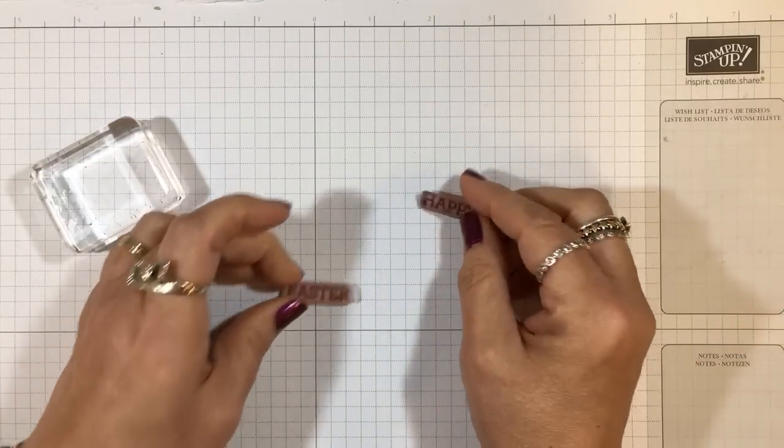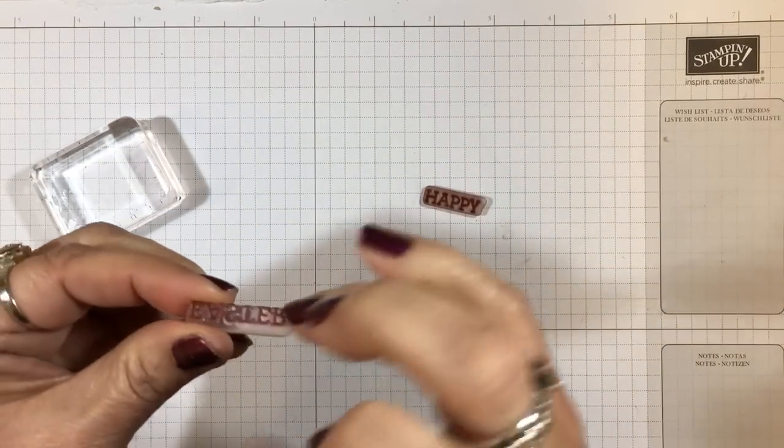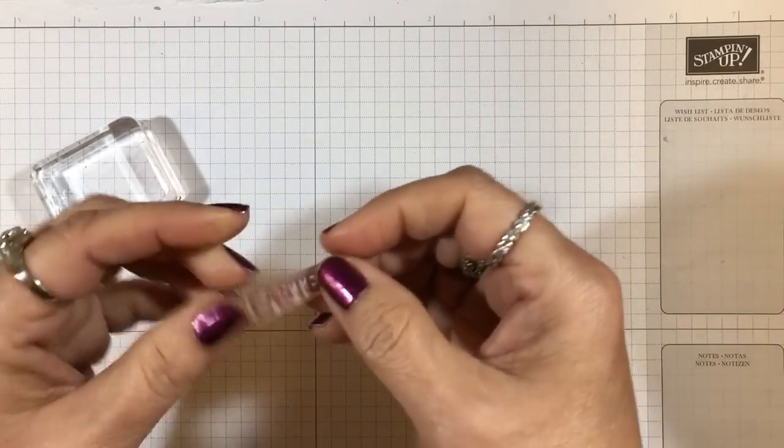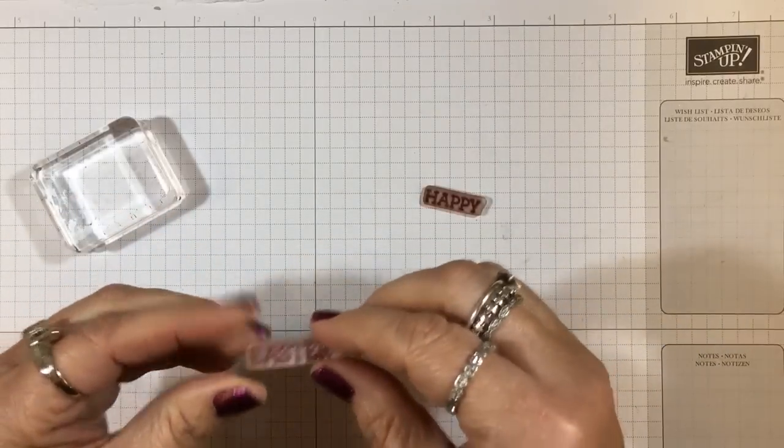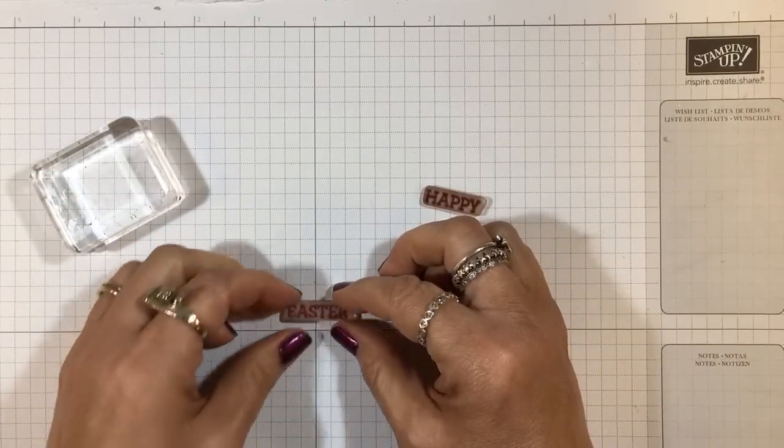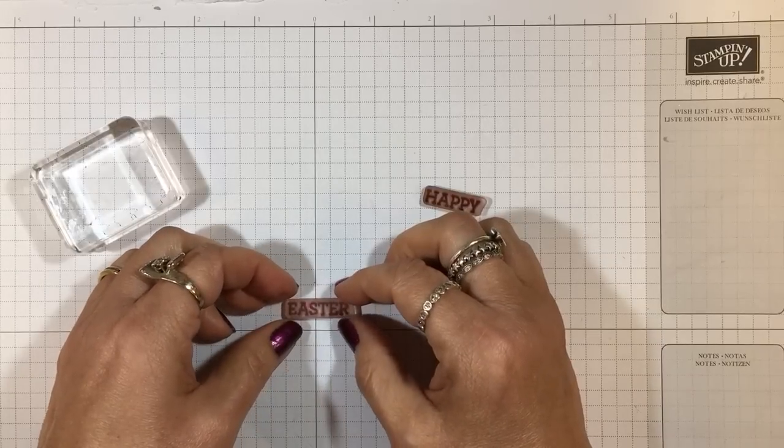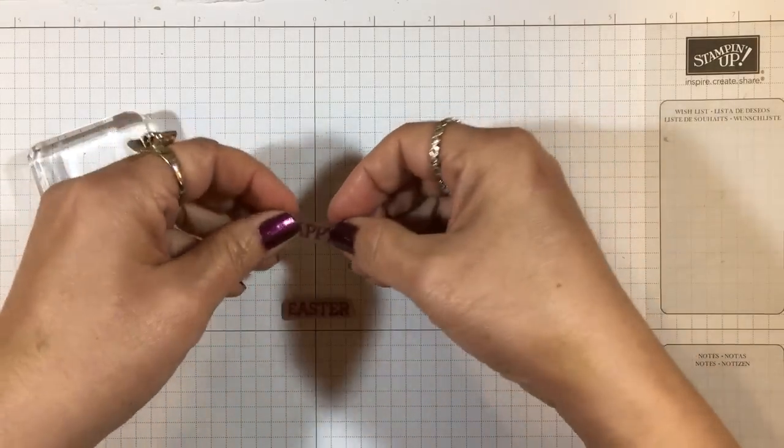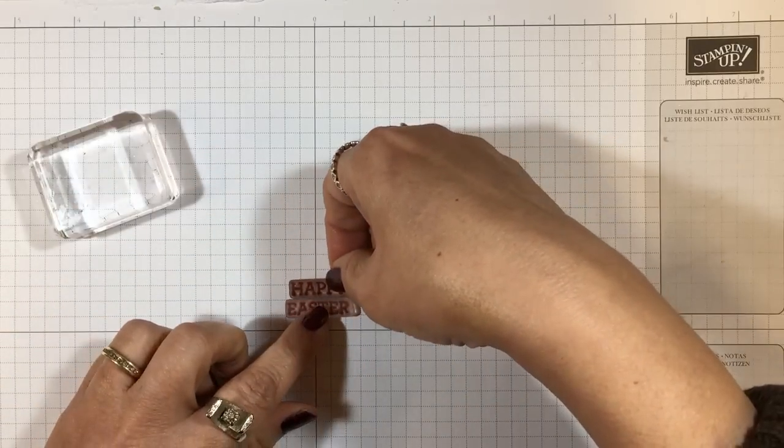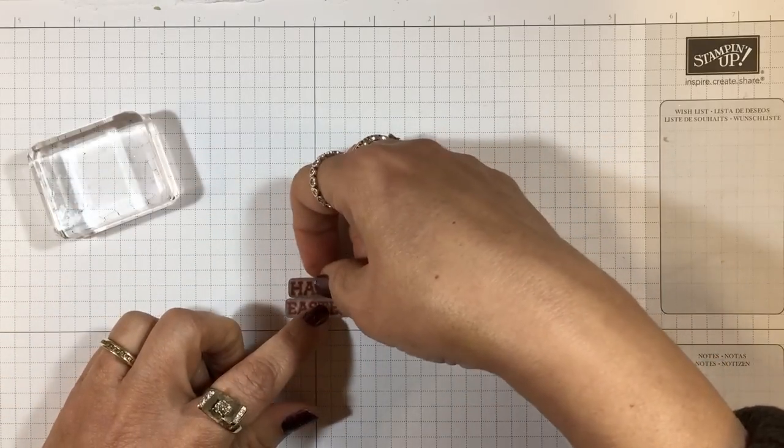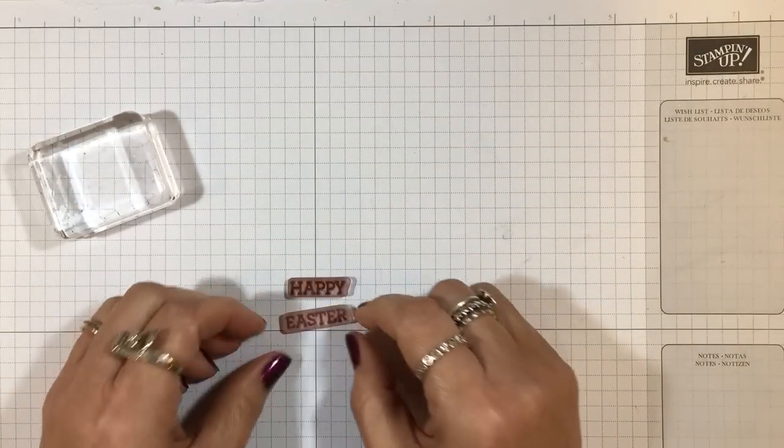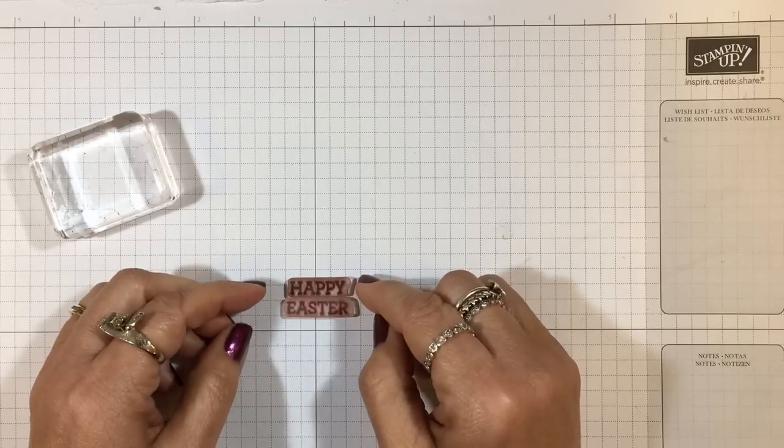smooth side up, and I'm gonna lay it on the line straight there, and then take the top one and line that up too. I use those lines on that grid sheet to help me keep it straight, and I can center it as well. Then I take my clear block and press down